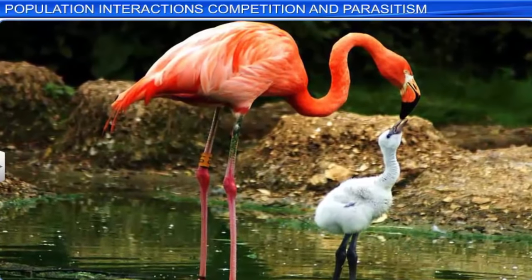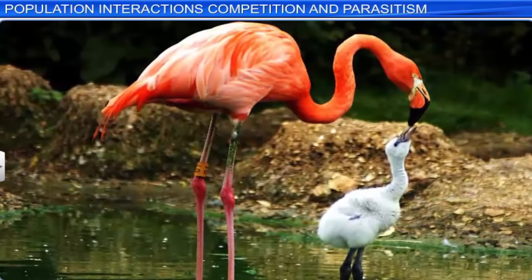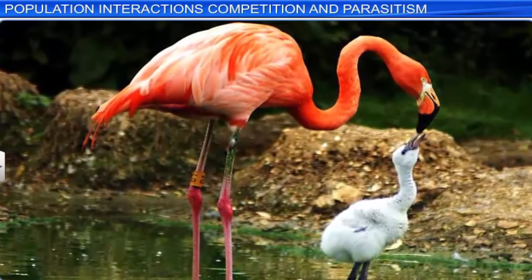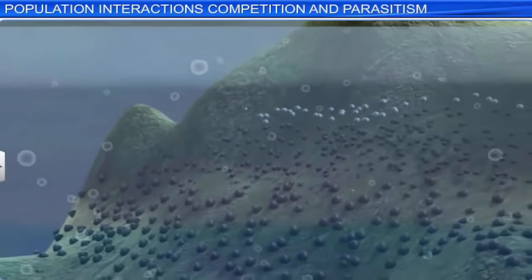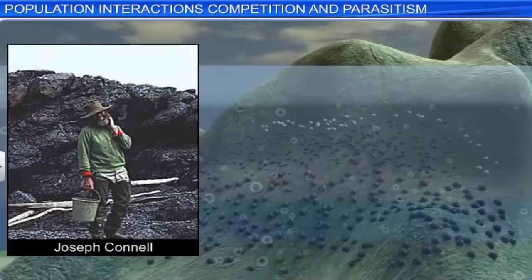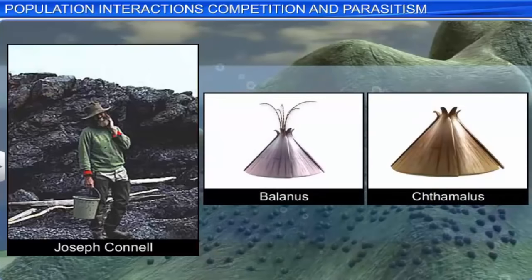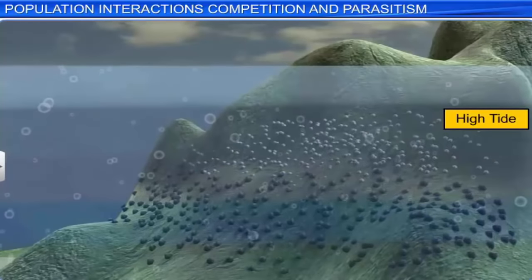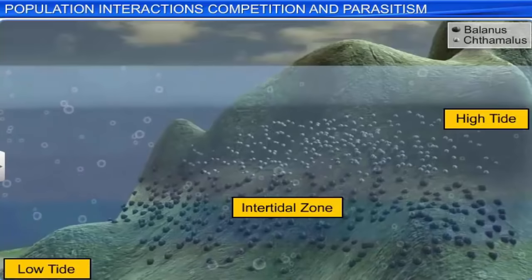Therefore, competition is best defined as a process in which the fitness of one species, measured in terms of its intrinsic rate of natural increase or R, is significantly lowered in the presence of another species. To explain competitive release, Connell conducted field experiments on the rocky sea coasts of Scotland using Balanus and Chthamalus. The experiment showed that the larger and competitively superior barnacle Balanus dominated the intertidal area and excluded the smaller barnacle Chthamalus from that zone.